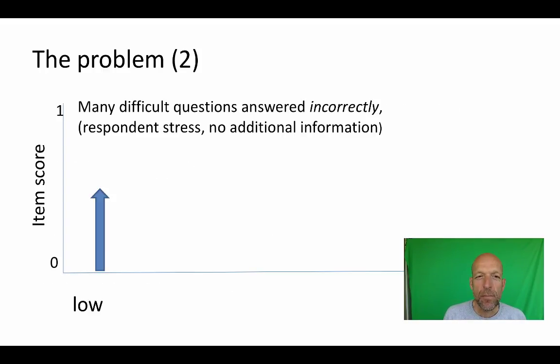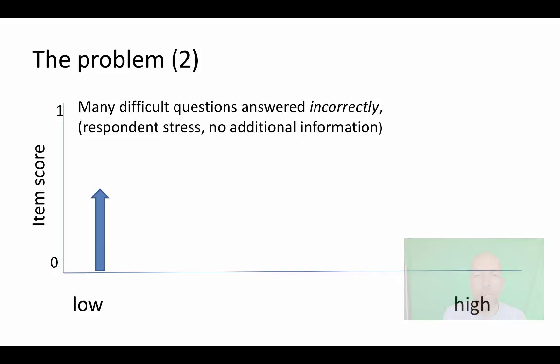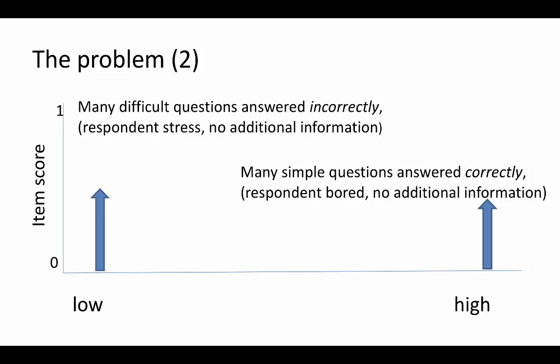There is another problem. Suppose that you do not know a lot about mathematics and you have to answer an awful lot of difficult questions about mathematics. That will cause respondent stress and give no additional information. At the same time, suppose you have a high score on the latent trait — then you have to answer many simple questions that you answer correctly, of course, but you will get terribly bored and it gives us little additional information.